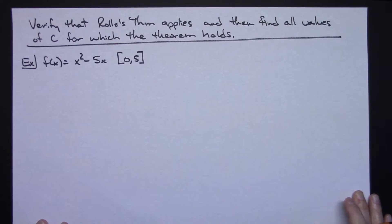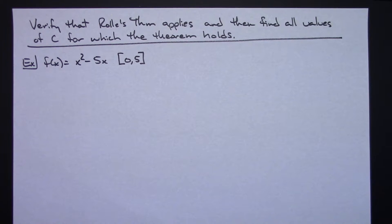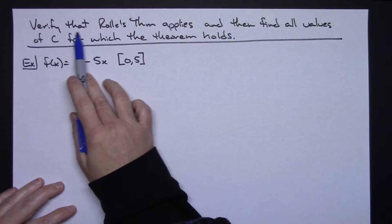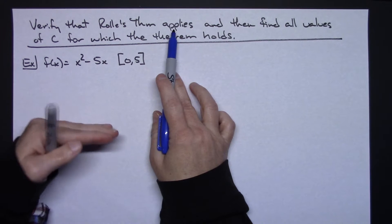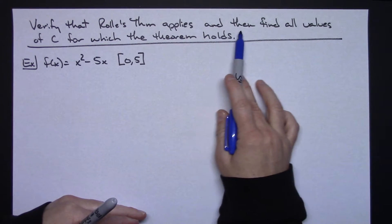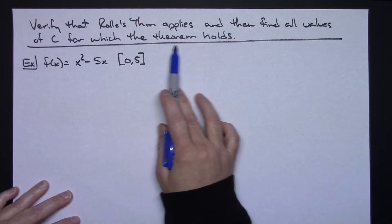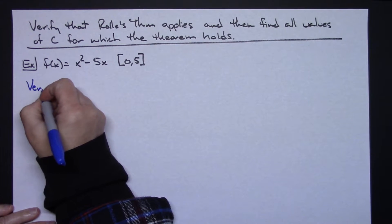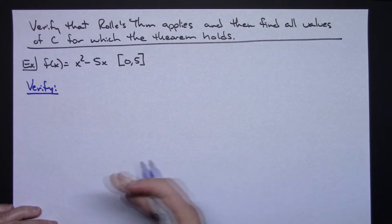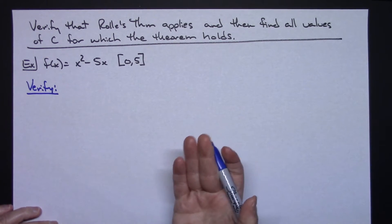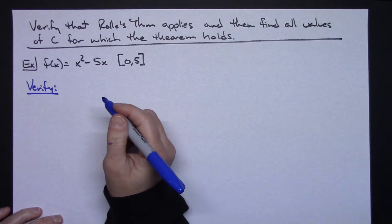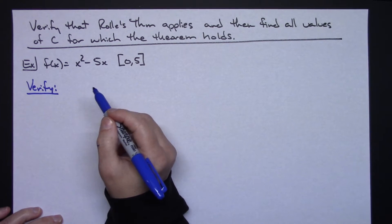Now let's take a look at an example. Sometimes textbooks get pretty thorough in what they want you to do. In my classroom, if students were doing something like this — it says verify that Rolle's Theorem applies — I would actually expect them to write things down where they verified that it applied, and then find all values of C for which the theorem holds. Let's do the verify part first. We've got to verify the theorem holds, because if it doesn't, we can't find values of C.